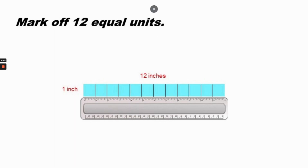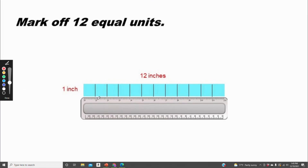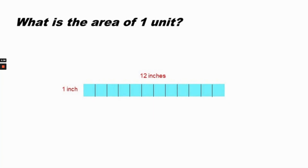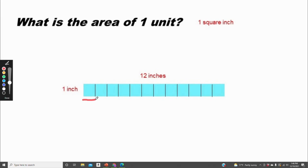I've marked off 12 equal units — a mark at each one-inch mark. On the ruler, I went to one inch and made a line, two inches and made a line, three inches and made a line, and so on until I've got 12 equal units of one inch each. The area of one unit is one inch by one inch, or one square inch.